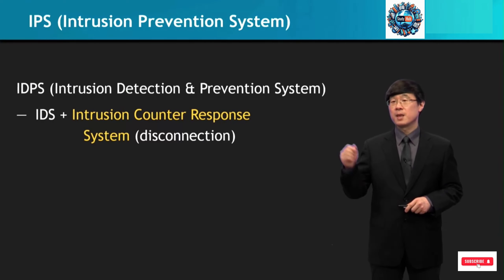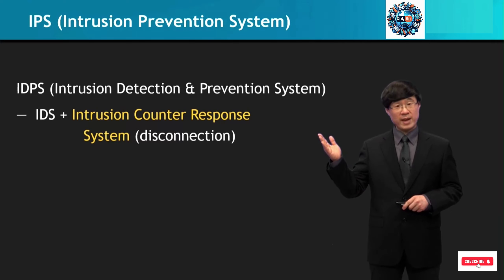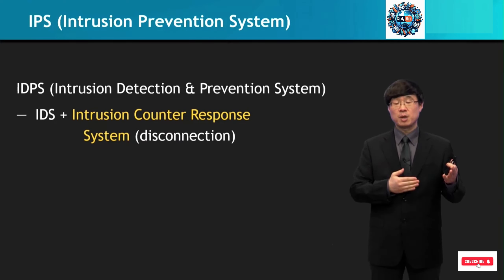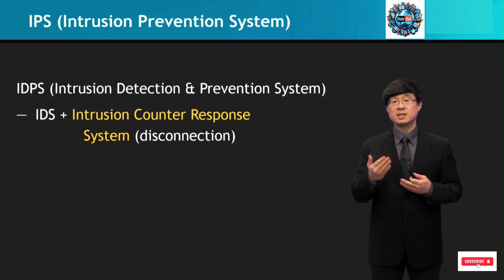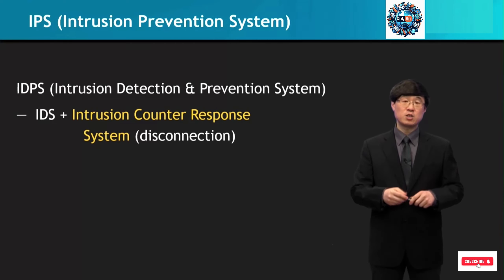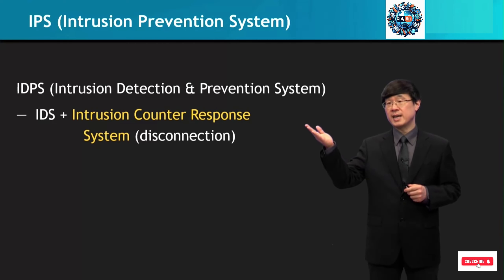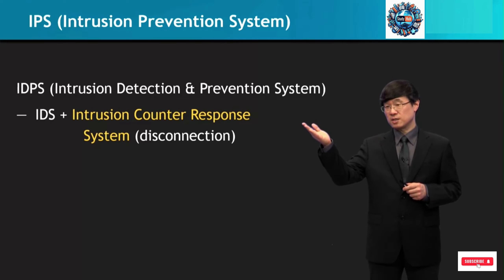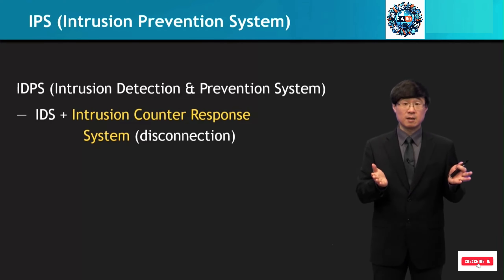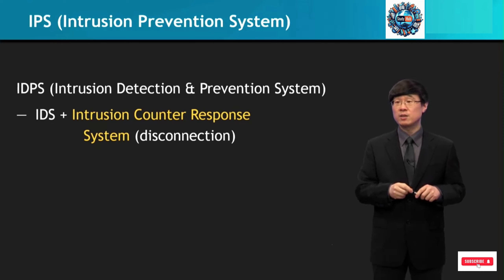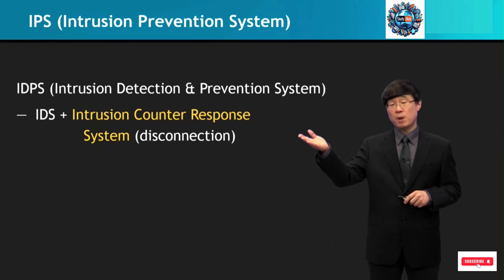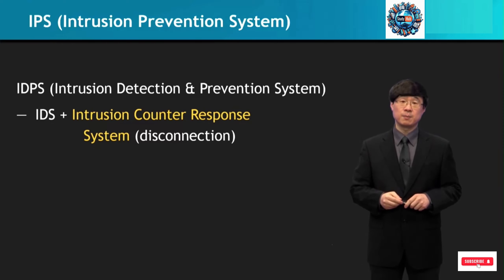The next type is more advanced, which not only does detection but also has some type of active prevention mechanism. This is what we call an IDPS, an Intrusion Detection Prevention System. It is an IDS system combined with an intrusion counter-response system, which can do disconnection activity.